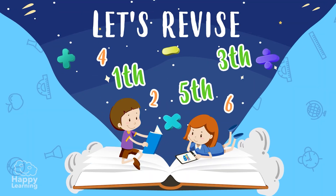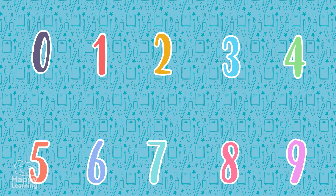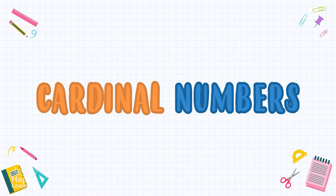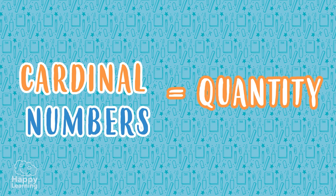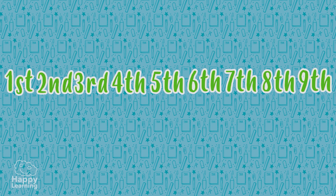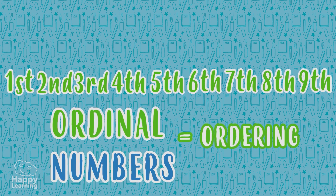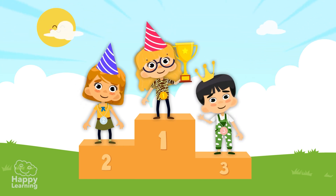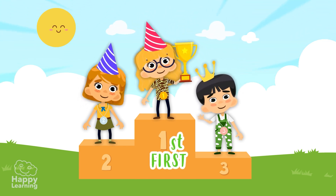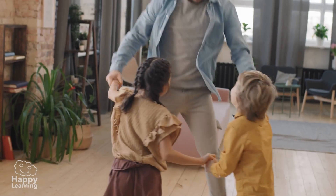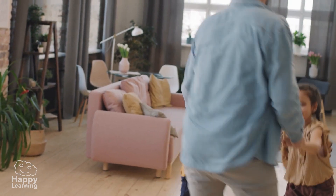Now let's review. Natural numbers are all numbers, and depending on how we use them, they can be cardinal or ordinal. Cardinal numbers are the ones we use for counting and for doing mathematical operations — they give us quantities. Ordinal numbers are the ones we use to order or to indicate the position of an element within a group. The race is over! Lau came first, Chris second, and Foo-chan third. And you're number one because you understood it the first time, not the second or the third!